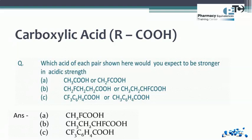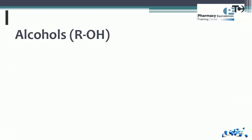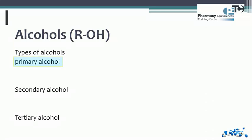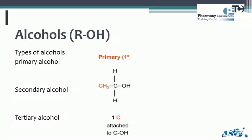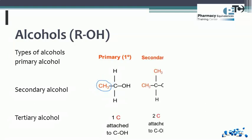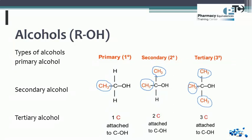The second group is alcohols. The formula of an alcohol is ROH. There are three types: primary alcohol, secondary alcohol, and tertiary alcohol. If there is one carbon attached to the carbon bearing OH, it is a primary alcohol; two carbons makes it secondary; and three carbons makes it tertiary.